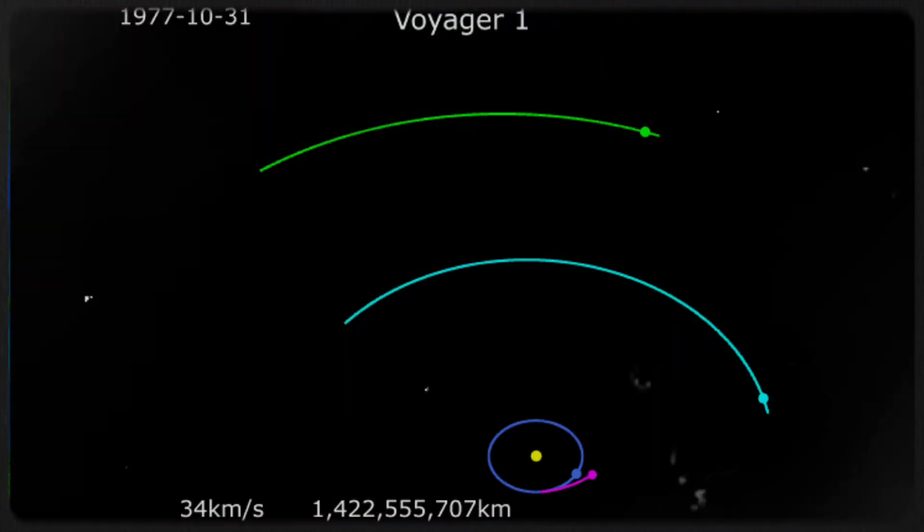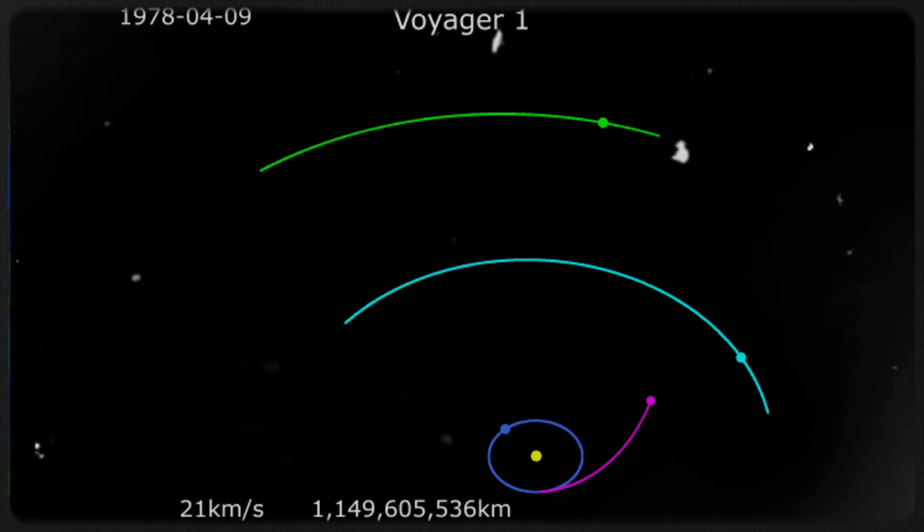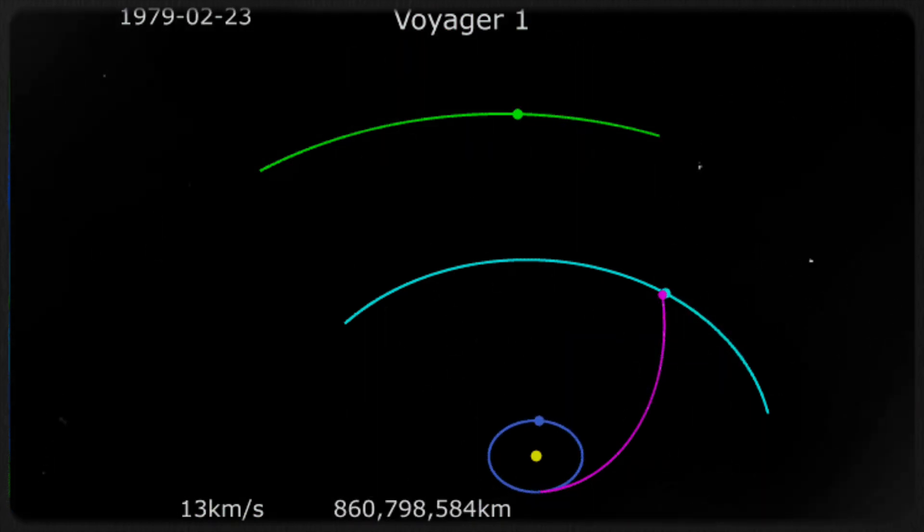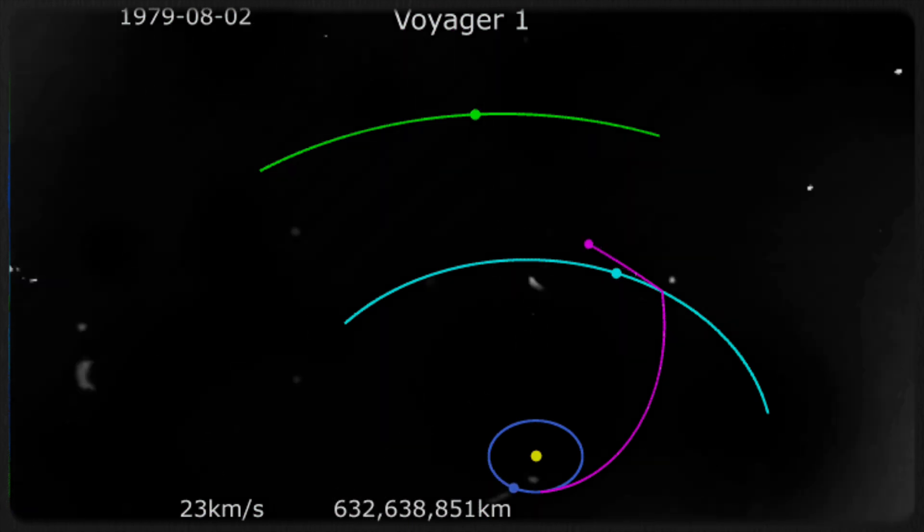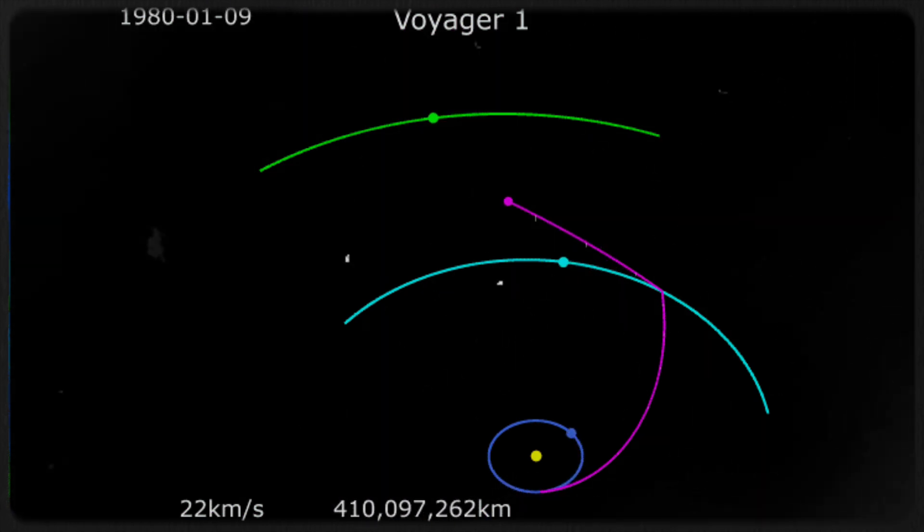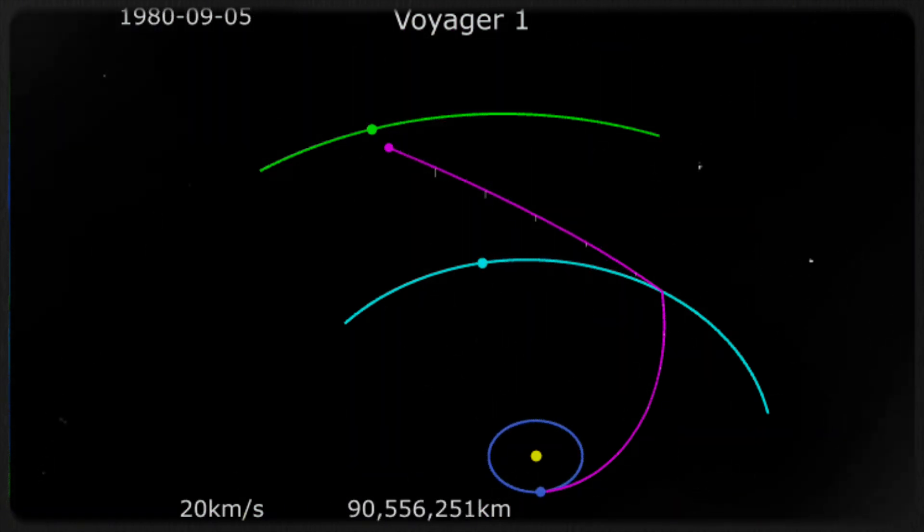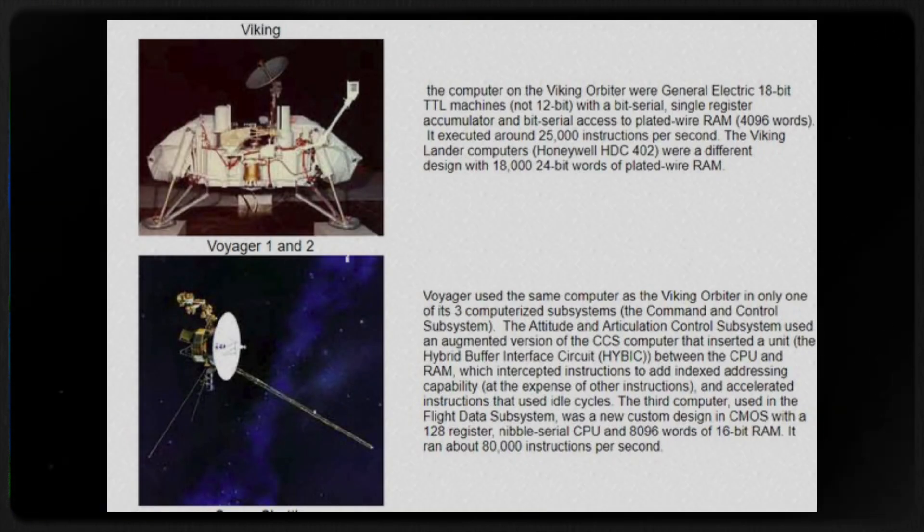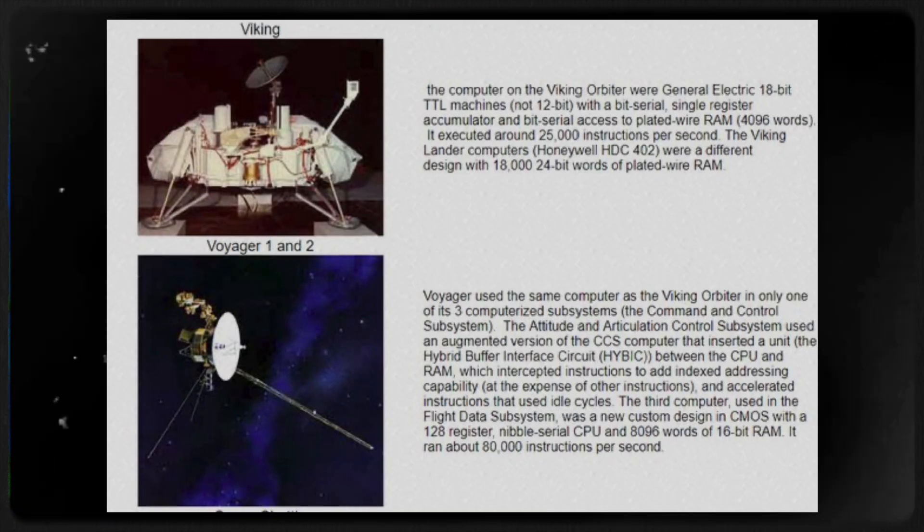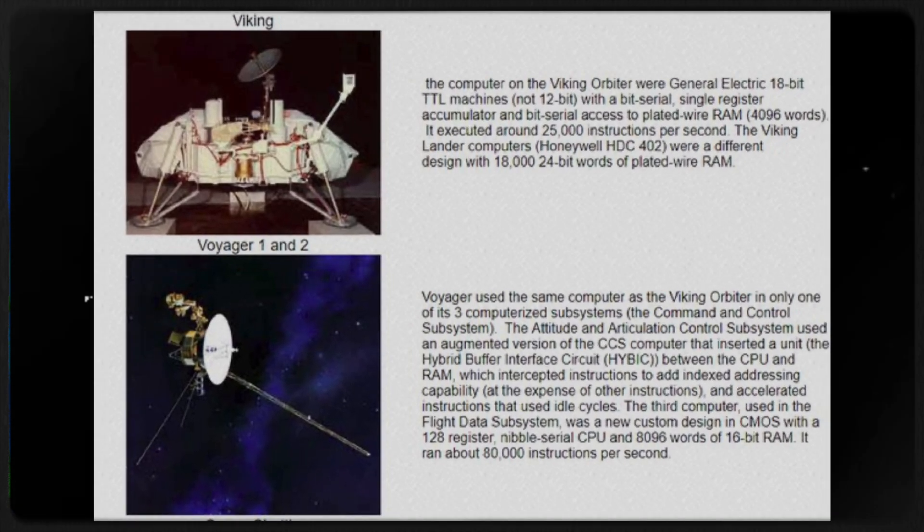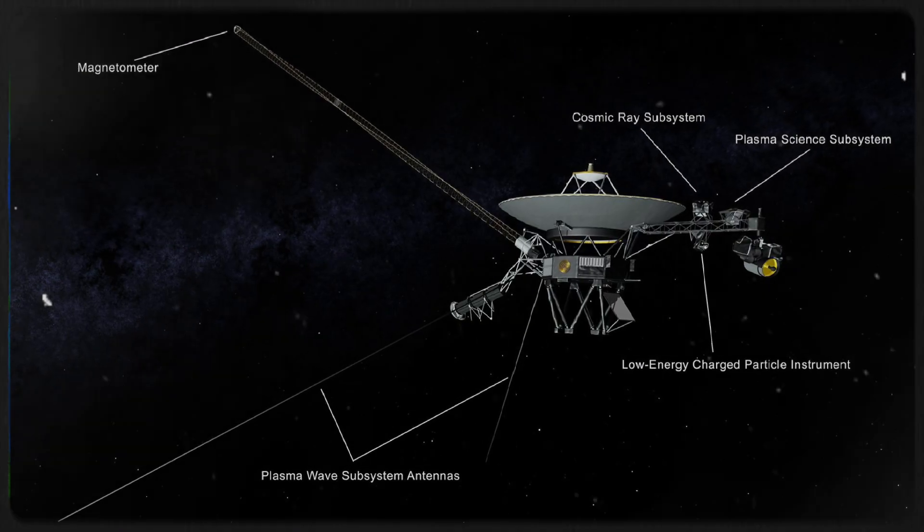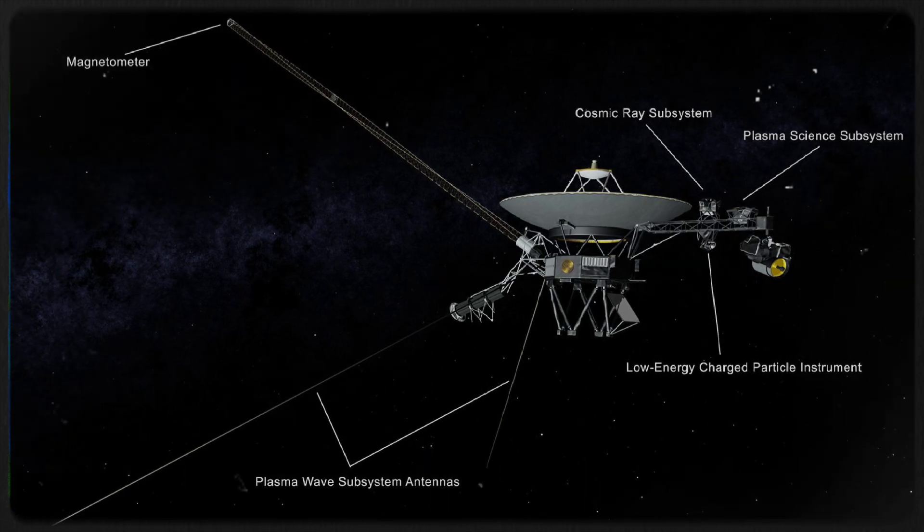Voyager 1 has traveled an astounding 12 billion miles since its launch 45 years ago, making it the farthest human-made object from Earth. What makes this achievement even more remarkable is that it was accomplished with technology that seems rudimentary by today's standards. For instance, neither Voyager probe was equipped with a microprocessor, a technology that was still a decade away from becoming mainstream at the time of their launch.